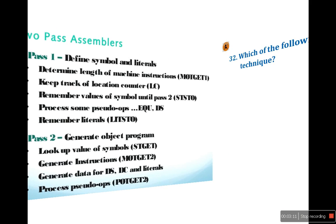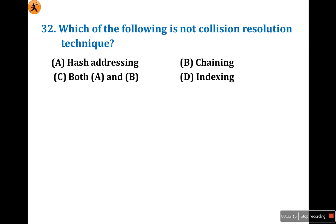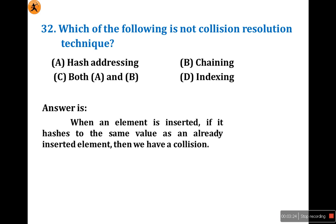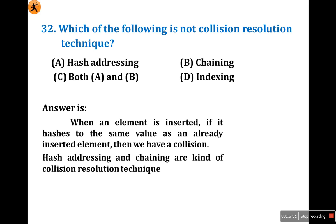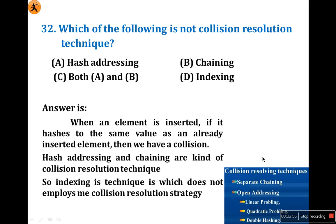Next question: which of the following is not a collision resolution technique? First, let us understand what is a collision. When an element is inserted, if it hashes to the same value as an already inserted element, we have a collision — two values inserted at the same location. Hash addressing and chaining are kinds of collision resolution techniques. The collision resolution techniques are separate chaining and open addressing. In open addressing, there are three types: linear probing, quadratic probing, and double hashing.